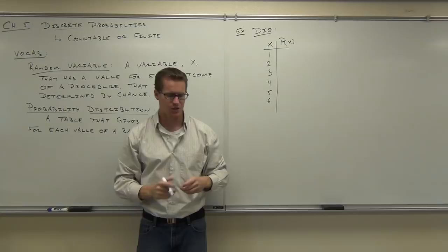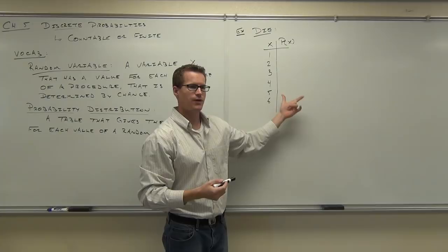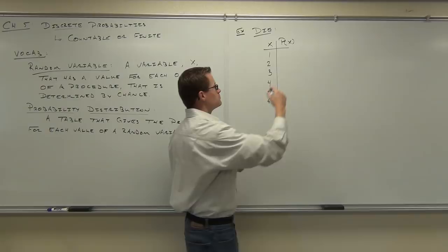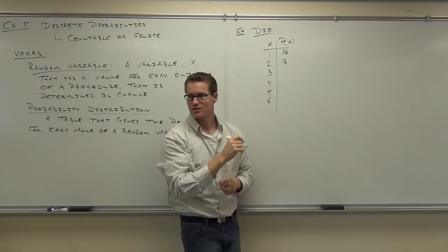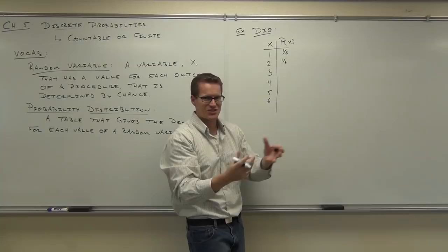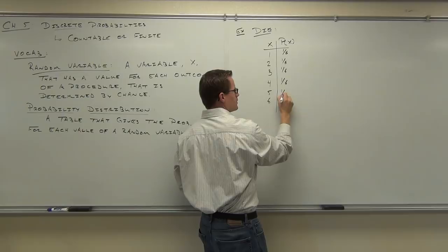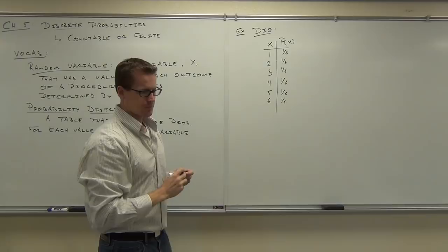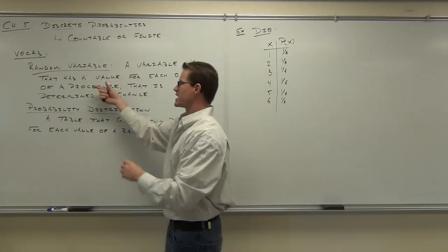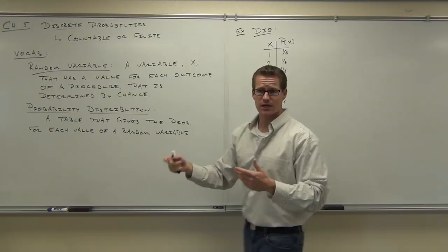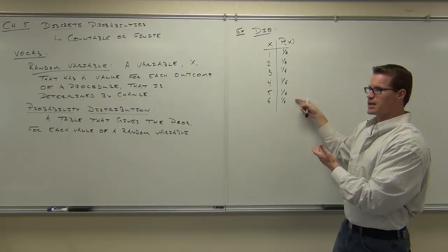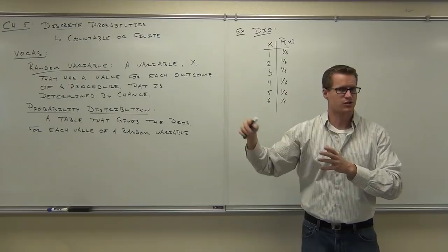The random variable represents our outcomes from the procedure. The probability column tells us what's the chance of getting each value. For a standard die, what's the probability of rolling a 1? A 2? A 3? It won't change — because a standard die is designed so that the chances are equal for all six sides. So we'd have 1/6 for every value of our random variable. This is classical probability.